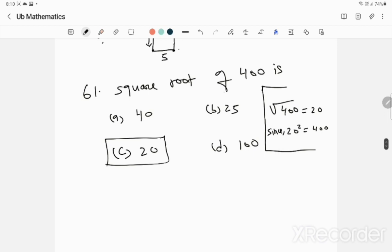Question 61: What is the square of 14? This is simple. The square of 20 is 400 because 20 squared is 400. Option C is the correct answer.